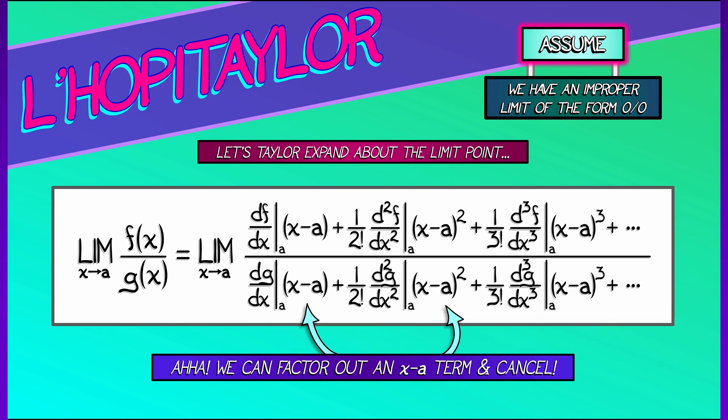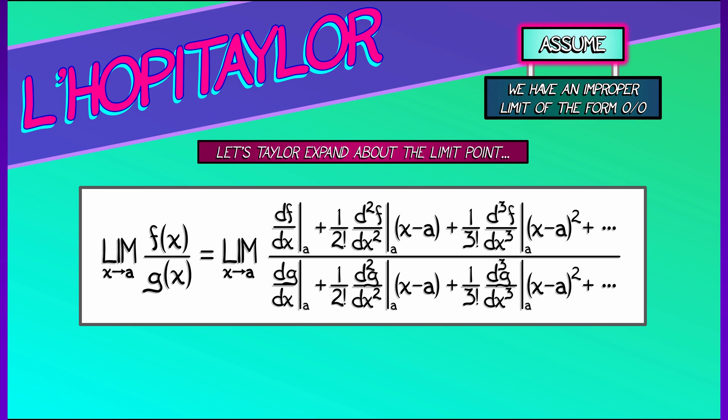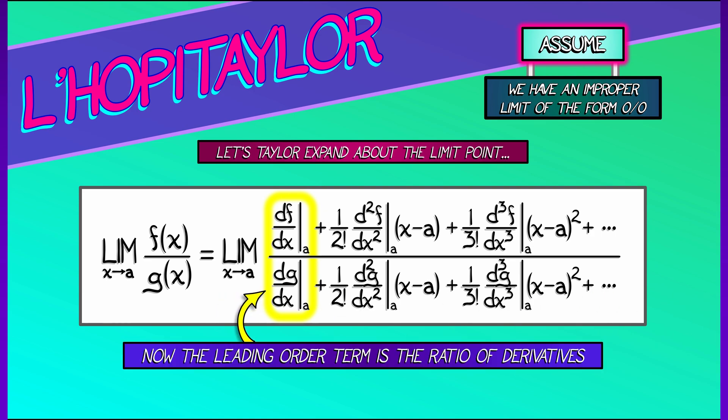We have polynomials in quantity (x - a). We can factor out that common term of quantity (x - a) and cancel from the numerator and the denominator. When we do so, now the leading order term in the top and the bottom is the derivative evaluated at a. And so if we evaluate this entire expression at x equals a, what do we get? All the higher order terms vanish. We're left with the ratio of the derivatives. That's L'Hopital's rule coming straight from Taylor series.